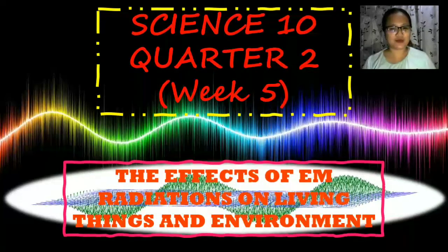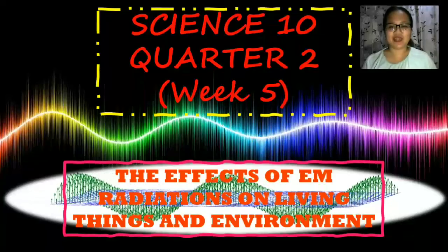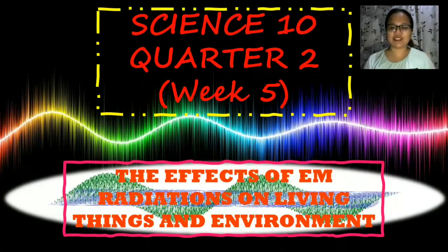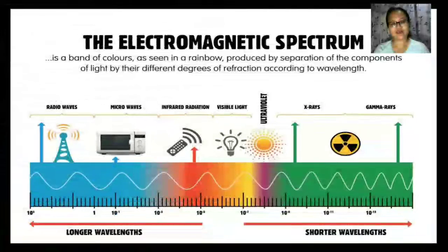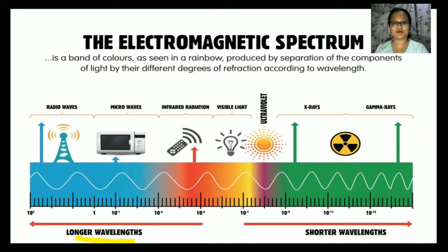Good day everyone. We are now in our week five with a module entitled 'The Effects of Electromagnetic Radiation on Living Things and Environment.' As a review, we have the electromagnetic spectrum, which is a band of colors as seen in a rainbow, produced by separation of the components of light by their different degrees of refraction according to wavelength. The longer wavelengths consist of radio waves, microwaves, infrared radiation, and visible light, while the shorter wavelengths include ultraviolet, x-rays, and gamma rays.